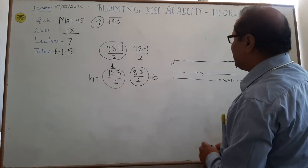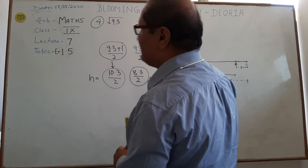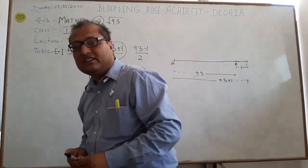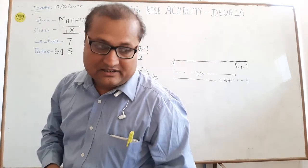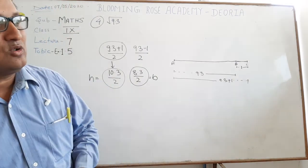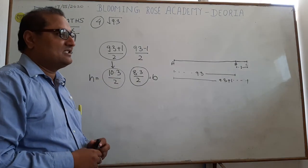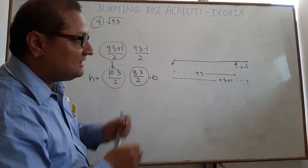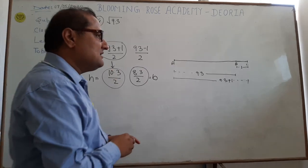So now A to C is taken as 9.3 plus 1. Now student, you have to take this either, the bit of the lower part.